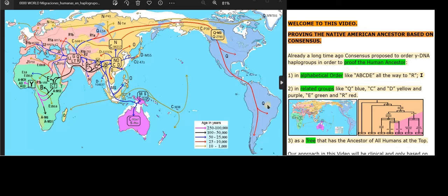Three ordering methods: 1. In alphabetical order like A-B-C-D-E all the way to R. 2. In related groups like Q-Blue, C and D-Yellow and Purple, E-Green and R-Red. 3. As a tree that has the ancestor of all humans at the top.